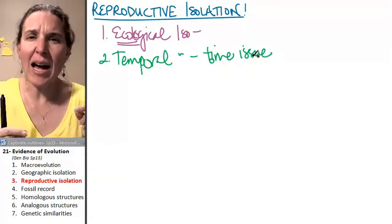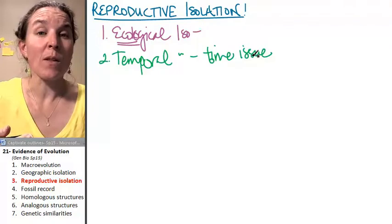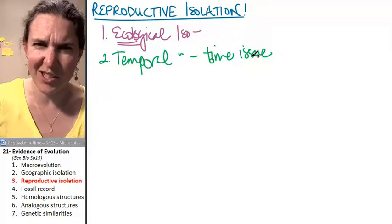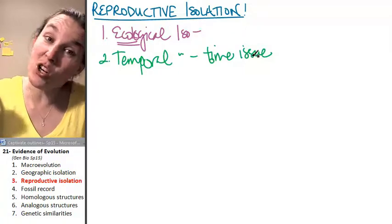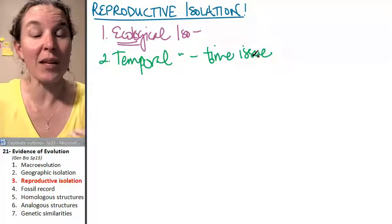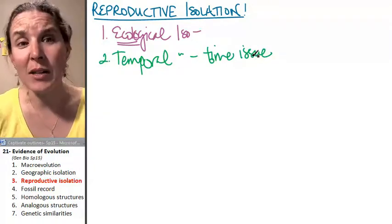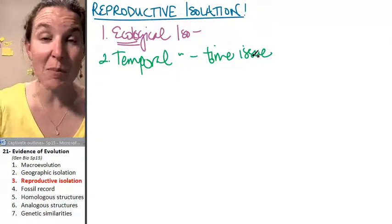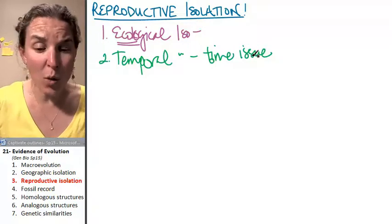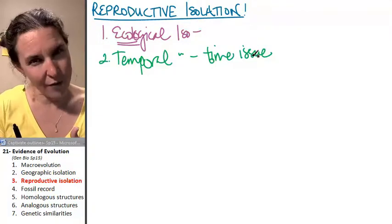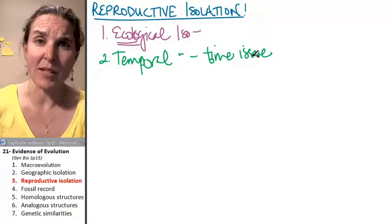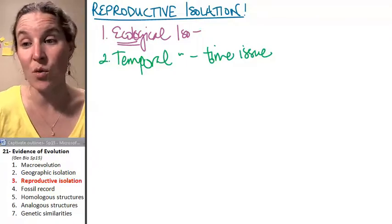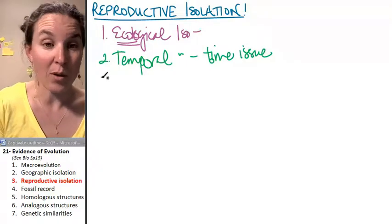So a time issue might be the grasshoppers. Maybe they all live in the grass now because do grasshoppers ever live in trees? So now even if they're not ecologically isolated from each other, they live in the same place, but one population likes to make babies in the morning and the other population likes to make babies at night. And maybe they would have been totally compatible, but their timing is off and they're not flexible. So temporal isolation means you're going to have a time issue. You can't make babies because you don't like to do it at the same time. It's always a problem.